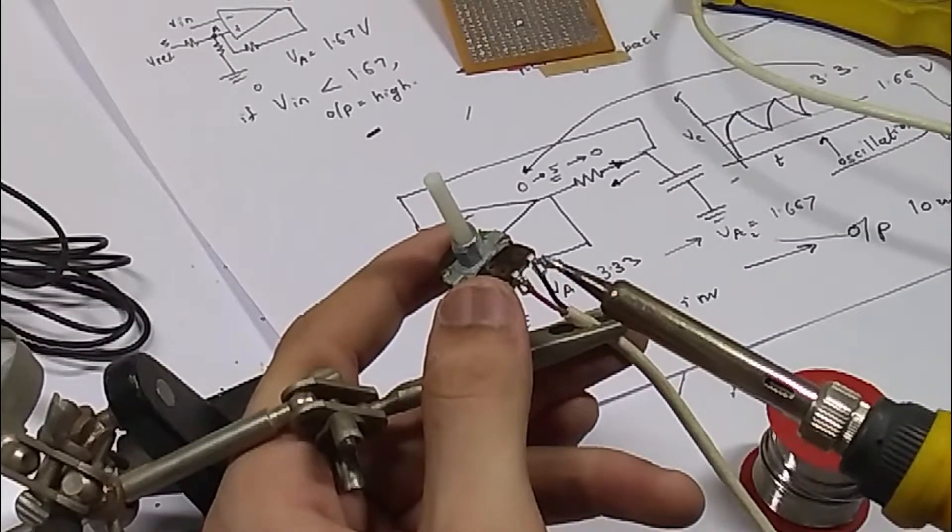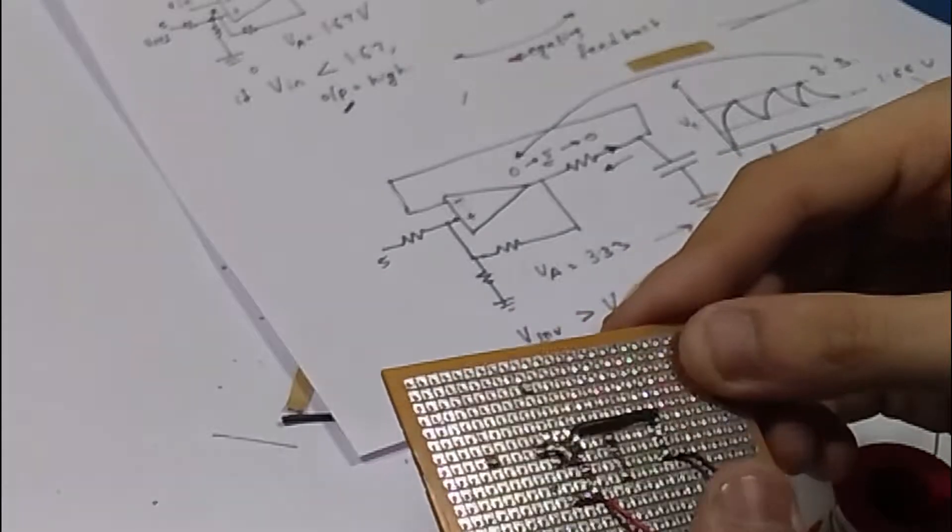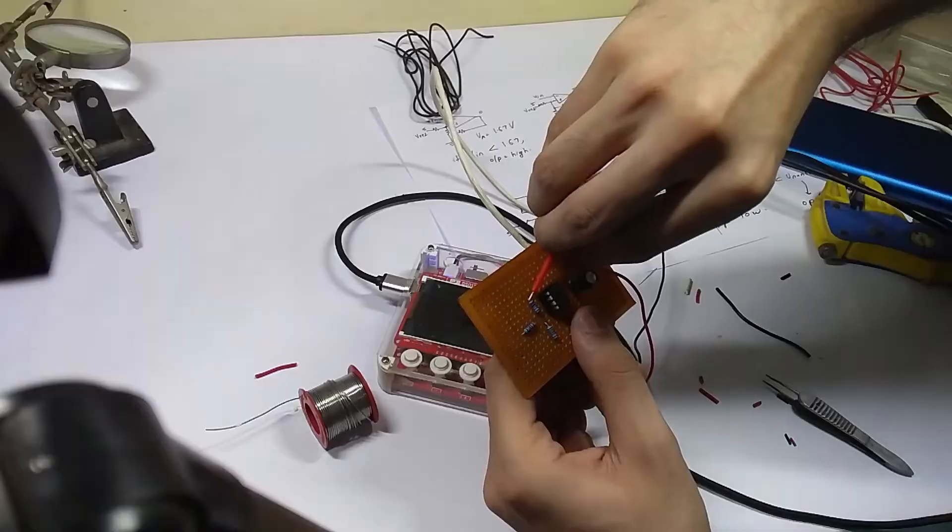I connected one end of these wires to the potentiometer and the other end, of course, to the circuit board. With this, it was time for testing.